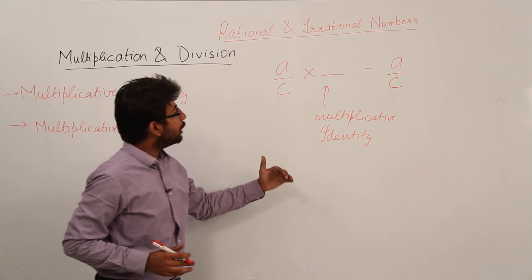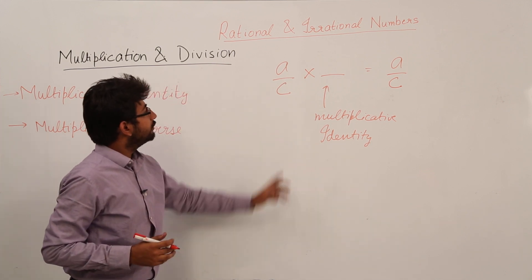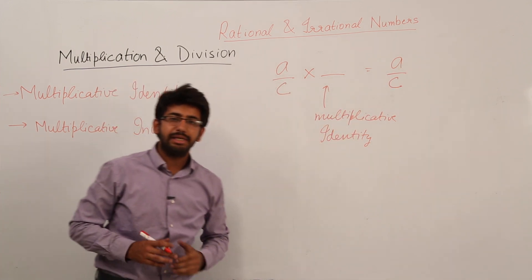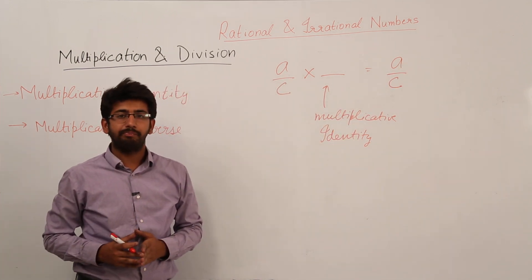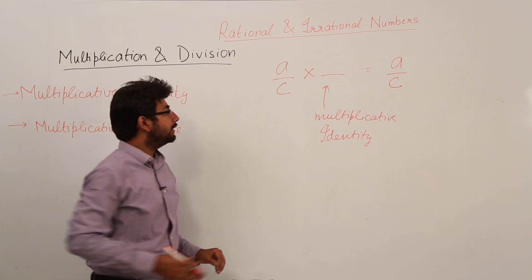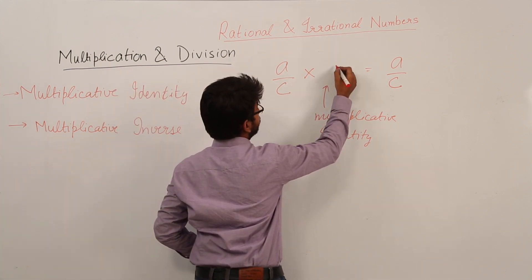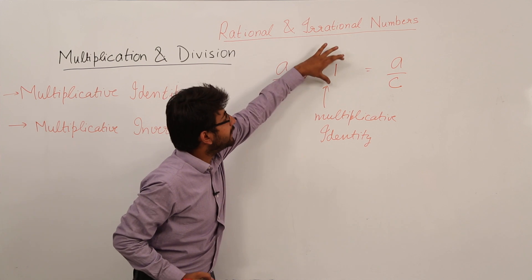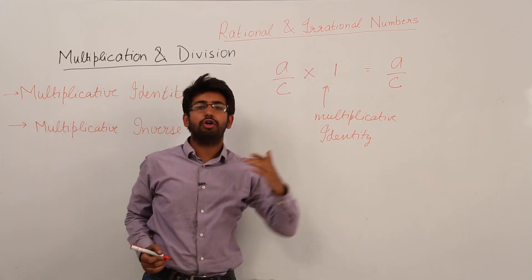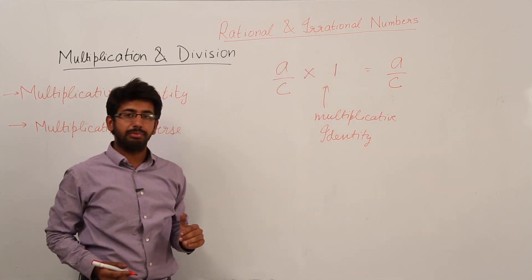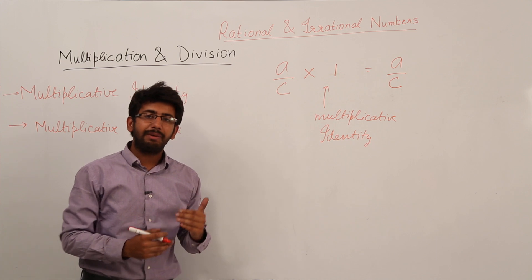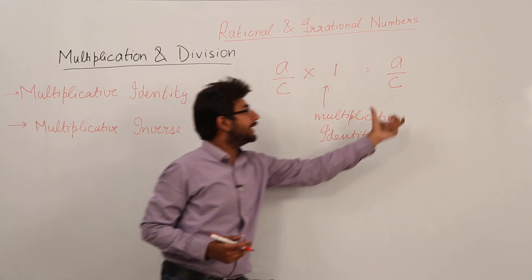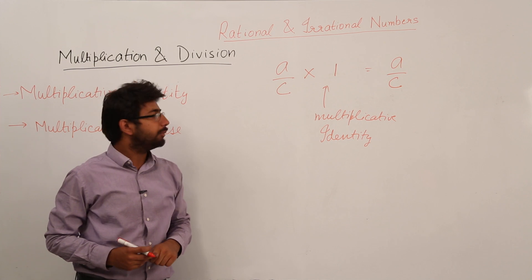Now, think about which element when multiplied to a rational number will give me the same rational number. If you think properly, the answer is 1. So, 1 is the multiplicative identity in case of rational numbers, because whenever you multiply any rational number with 1, you will get the same rational number as the product.